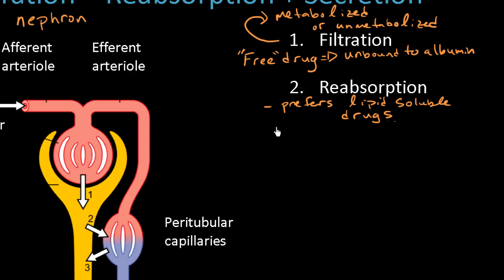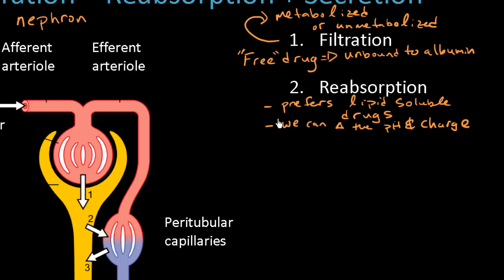That's the way our body does it. Fortunately, we can also manipulate the pH of the urine to add a charge onto uncharged drugs — we can change the pH and charge. By doing so, we can prevent the reabsorption of certain drugs. This concept, covered in a future video, is called ion trapping. By making something charged in the urine, we can prevent reabsorption. It has nothing to do with filtration and everything to do with reabsorption — remember that.